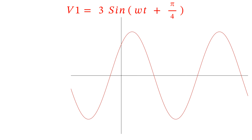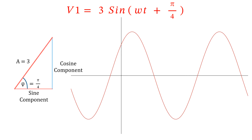We're going to add sine and cosine waves together. v1 is 3 sine(ωt + π/4) radians. Because there's a phase shift, think of it as having a sine component and a cosine component. The phase shift phi is π/4 radians or 45 degrees. To find the amplitude, square the sine and cosine components, add them, then square root using Pythagoras — they add up to three. So the amplitude is 3 volts.